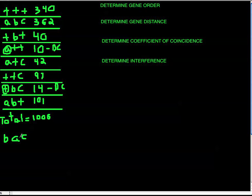Now we determine the distance between B and A, and the distance between A and C, then add them. To do this, identify your single crossovers — the remaining classes. Combine them based on which numbers are closest together: 40 and 42 are closer to each other than to 97 or 101, so we keep those together. We'll label them group 1 and group 1, and the others group 2 and group 2.